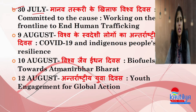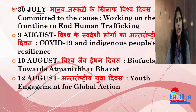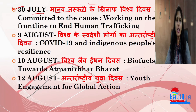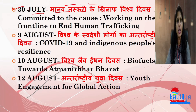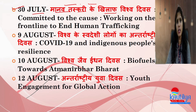30th July is World Day Against Trafficking in Persons. This day is observed against human trafficking — the buying and selling of human beings as slaves. The day is observed to raise awareness and fight against this issue.